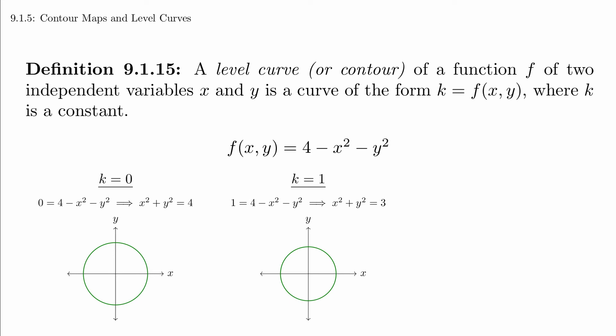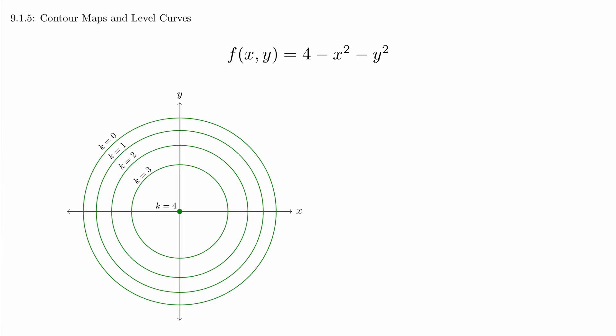Let's look at the trace at height 1. This gives us a circle of radius square root of 3. And at height 2, we get an even smaller circle. When we put these pictures together with a couple more into one graph,